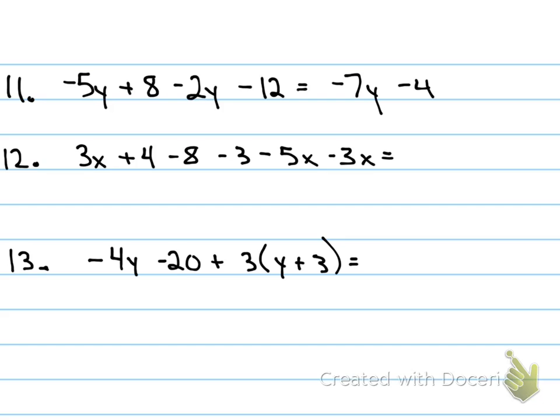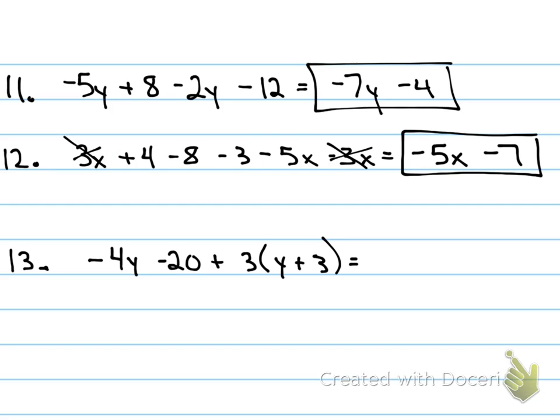Now, did anybody catch something on number 12? Did anybody catch something on number 12? What did you catch, Andrew? Very good. My opposites. All right, now that I've canceled out my opposites, the only X term that's left is negative 5X, so I just write that in my answer. Now, I need to just combine these three numbers. What is 4 minus 8 minus 3? Negative 7. Negative 7. Okay, and that's my answer.